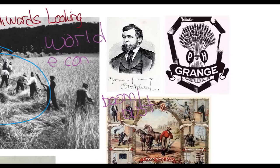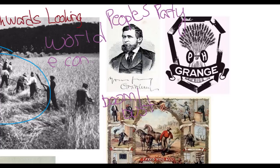The control of the economy by powerful corporations like railroads and banks, and the loss of individual control over one's fate, led farmers to look for solutions — ways to organize and express their frustration. They looked for ways for the common man to reestablish himself as an important figure in American politics, as he had been prior to the Civil War. We see a number of movements originate after the Civil War that gradually grow into the People's Party.